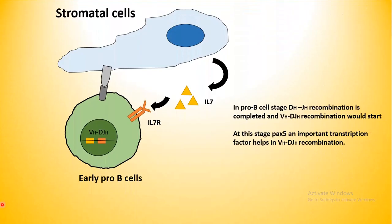As time progresses, the early pro-B cell detaches from that specific stromal cell and goes and binds to other stromal cells which are IL-7 secreting. IL-7 has a distinct role in early pro-B cell development. The IL-7 receptor is situated on the early pro-B cell, and IL-7 binds to the IL-7 receptor, giving rise to specific signaling. At this point, V-D-J recombination takes place, and the heavy chain of the B-cell receptor is produced from this point onwards.